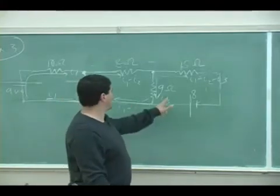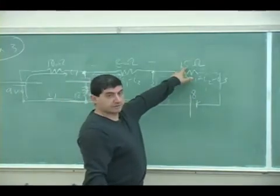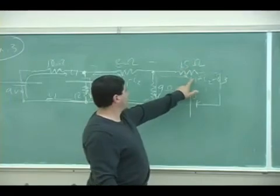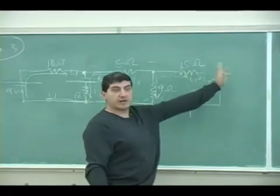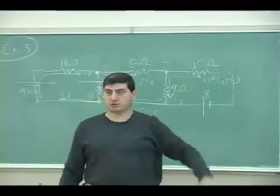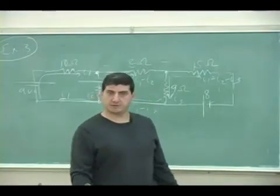So again, if I want to know what's the current through the 15-ohm resistor, I do i1 minus i2 minus i3, I combine all three of them to know the current through the 15-ohm resistor, okay?